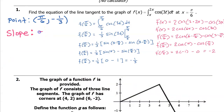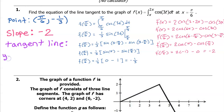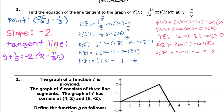Now that we have a point and the slope, we can write the equation of the tangent line. It goes y minus y1 — so that's y minus negative one-third, which is y plus one-third, is equal to the slope times x minus x1, or negative 2 times x minus pi over 6. And that's it.